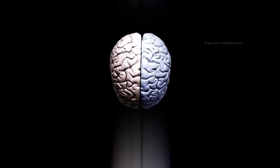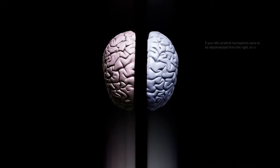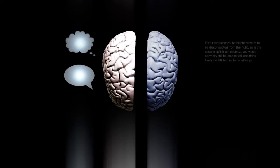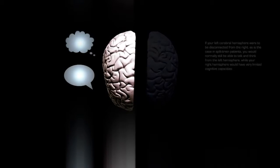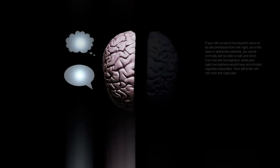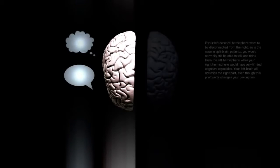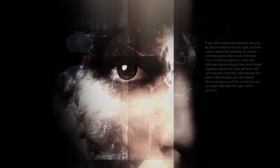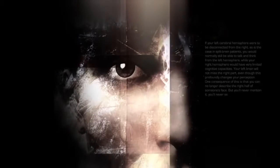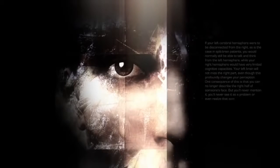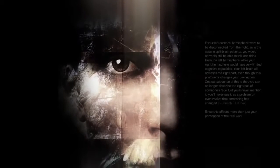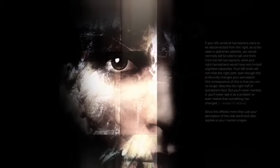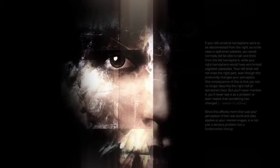If your left cerebral hemisphere were to be disconnected from the right, as is the case in split brain, you would normally still be able to talk and think from the left hemisphere, while your right hemisphere would have very limited cognitive capacities. Your left brain will not miss the right part, even though this profoundly changes your perception. One consequence of this is that you can no longer describe the right half of someone's face, but you will never mention it, you will never see it as a problem or even realize that something has changed. Since this affects more than just your perception of the real world and also applies to your mental images, it is not just a sensory problem, but a fundamental change in your consciousness.